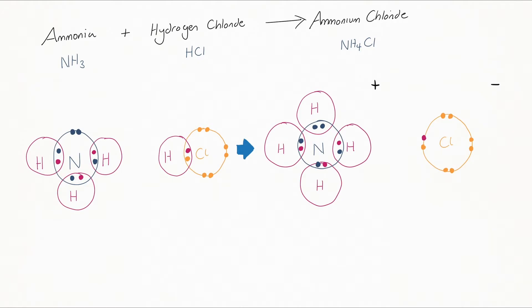If we look on the left again, ammonia, NH3, has got three covalent bonds, and there's also a pair of unpaired electrons on the nitrogen atom. Hydrogen chloride, HCl, has got a single covalent bond here. If that bond were to break, the hydrogen, the proton...